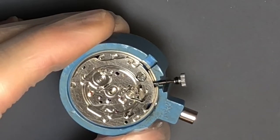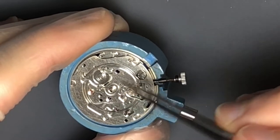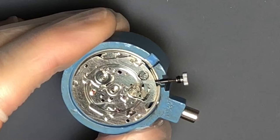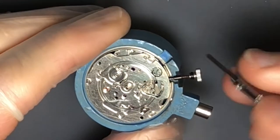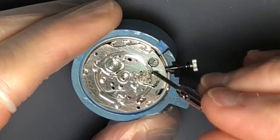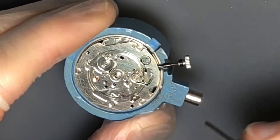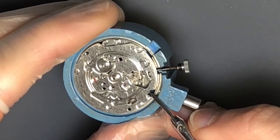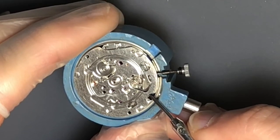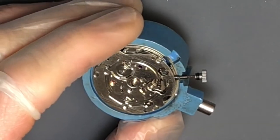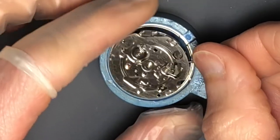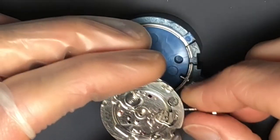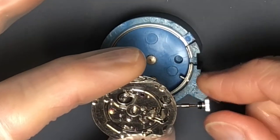With the calendar plate back in place, just a couple of things to check. We'll start with the upper reset hammer that resets the 12-hour register up top. And that action is nice and smooth.